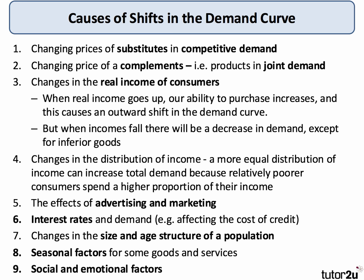The real income of consumers — income adjusted for inflation — is also important in determining consumer demand. Normally, for normal goods, when real income goes up, our ability to buy a good or service increases, and this causes an outward shift of the demand curve. Equally, when incomes fall, we might expect an inward shift of demand, except for inferior goods — and again, we'll have a separate topic video on inferior goods. The distribution of income is also a key factor. For example, if we shift income towards relatively poorer, lower income households, they tend to spend a higher percentage of their income, and therefore a redistribution of income could, in theory, increase total market demand.